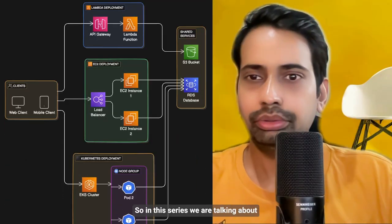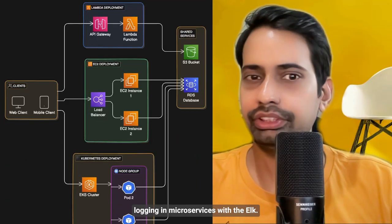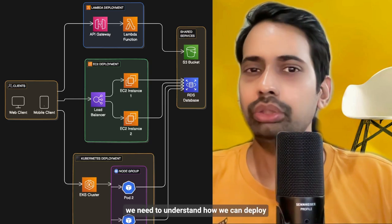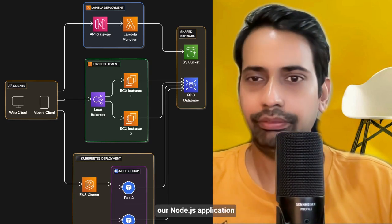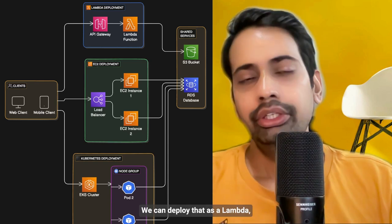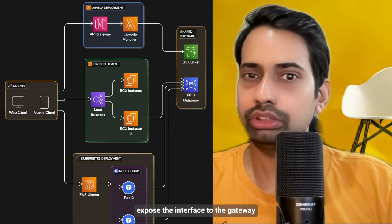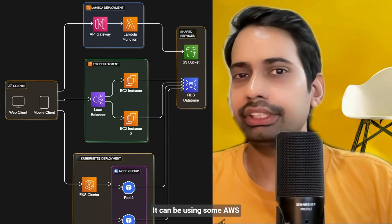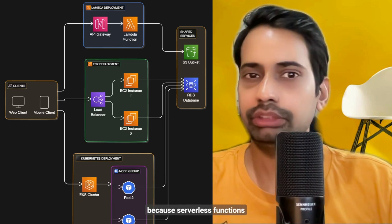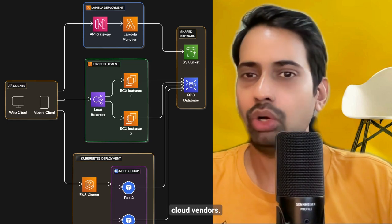Hi everyone. In this series we are talking about logging in microservices with the ELK stack. First we need to understand how we can deploy our Node.js or NestJS application. You can deploy it as a Lambda and expose the interface through the API Gateway. Internally it can use AWS services, Azure, or GCP, because serverless functions are supported by all cloud vendors.